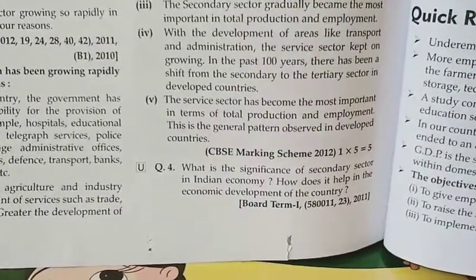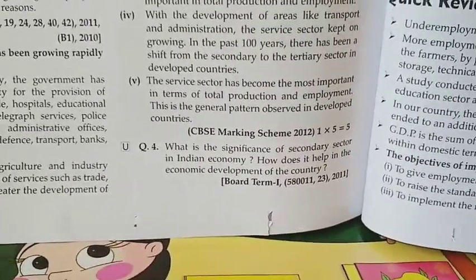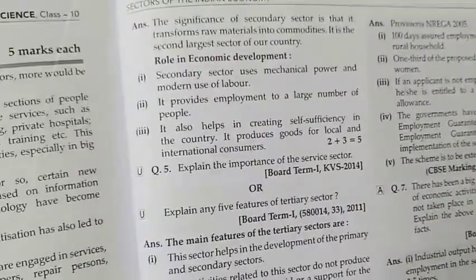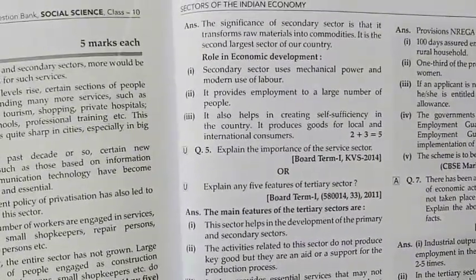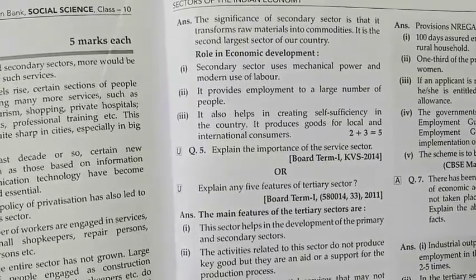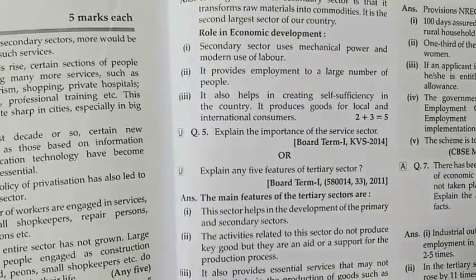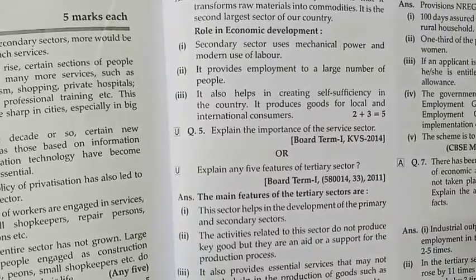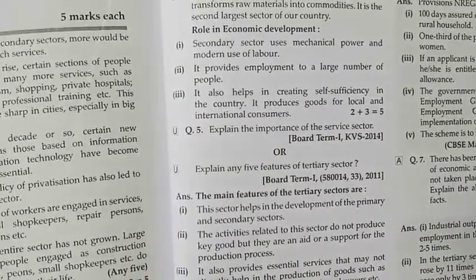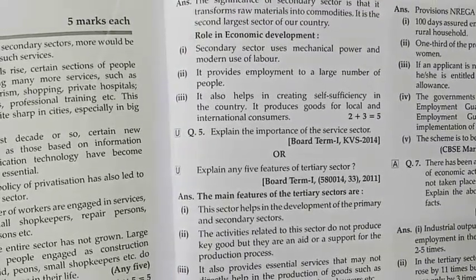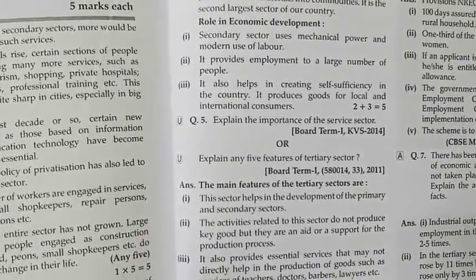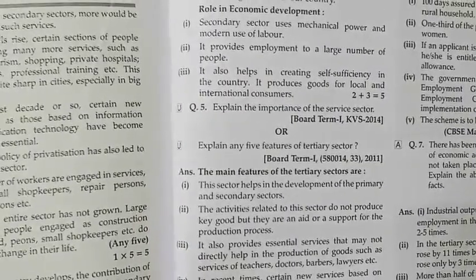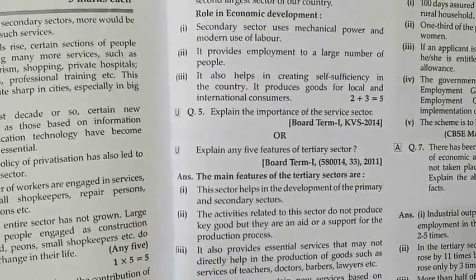Then: what is the significance of the secondary sector in the Indian economy and how does it help in economic development? The importance, as you know, is converting raw material into finished goods. How does it help economic development? You can write that producing more and more goods means more goods and services will be manufactured in our country, so our dependence on other countries will decrease. More production will contribute to the GDP of the country, it will provide employment to people, and our country will become self-sufficient because the more local goods we produce, the less our dependency on imported items will decrease.